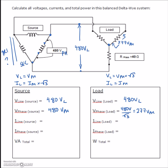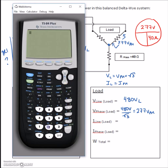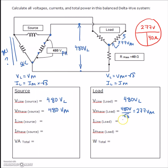Now we use straight Ohm's Law to find the currents. The phase current is 277V ÷ 40Ω. So 277 ÷ 40 gives us 6.925A — that's our phase current of 6.925A on the phase of the Y load.